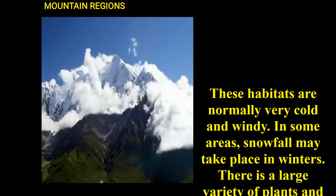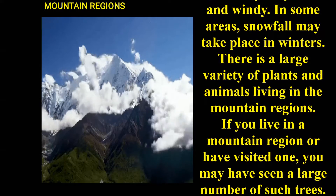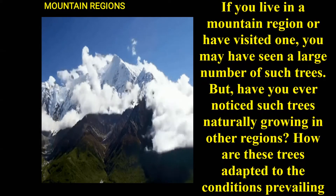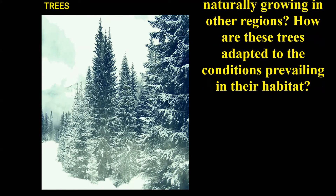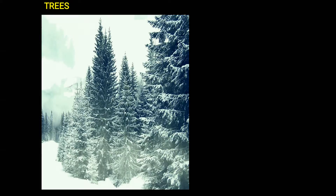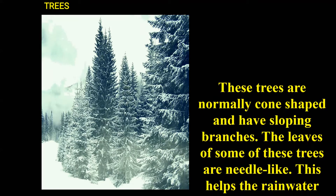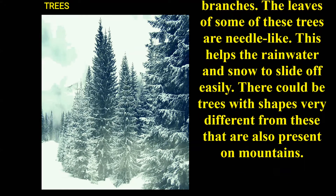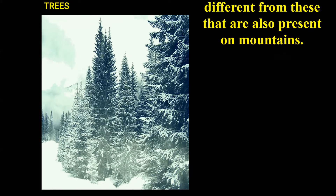Mountain habitats are normally very cold or windy, and in some areas snowfall takes place in winter. There is a large variety of plants and animals living in mountain regions. Trees in mountain regions are typically cone-shaped with sloping branches. The leaves of these trees are needle-like, which helps rainwater and snow to slide off easily.